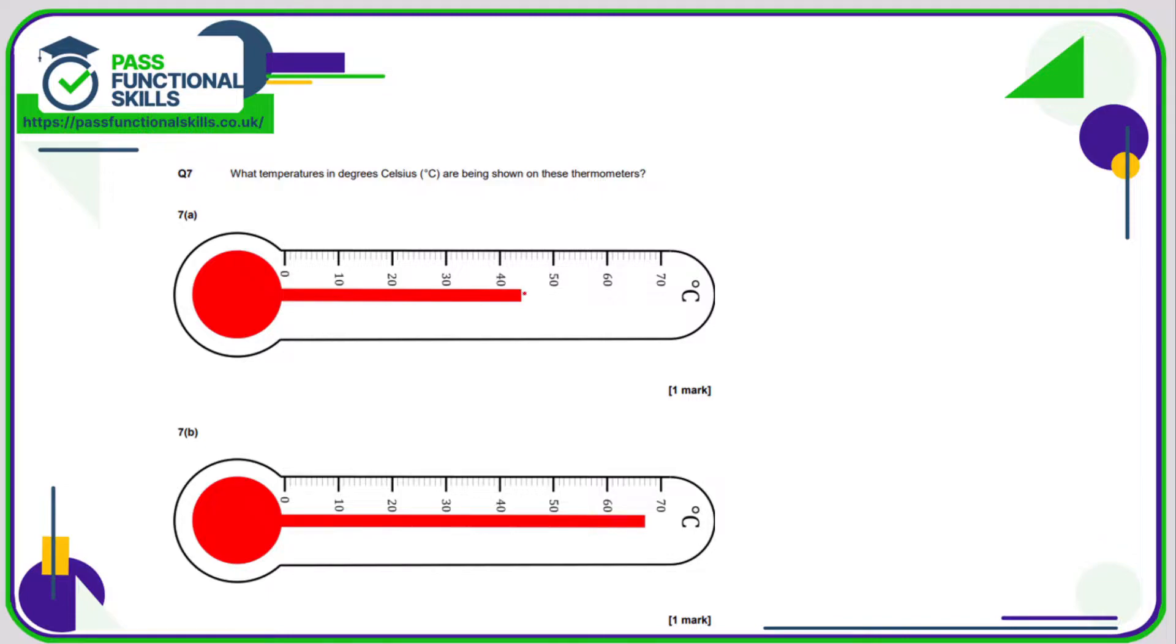Question number seven. So we can see from 140 to 150, we're just going up in one. So 141, 142, 143. I would say that is 44 degrees Celsius, and this one here looks like 67 degrees Celsius.